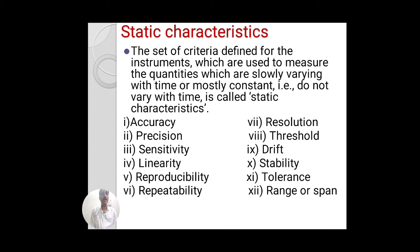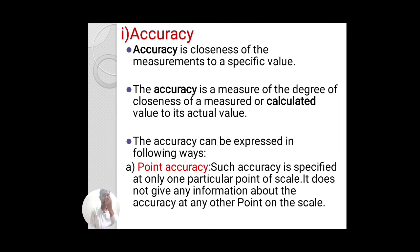The static characteristics parameters are: first, accuracy; second, precision; third, sensitivity; fourth, linearity; fifth, reproducibility; sixth, repeatability; seventh, resolution; eighth, threshold; ninth, drift; tenth, stability; eleventh, tolerance; and twelfth, range or span. Starting with accuracy — what is accuracy?